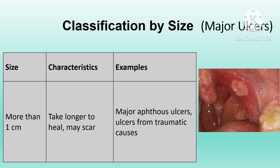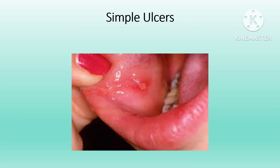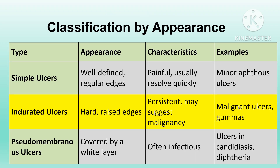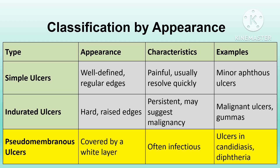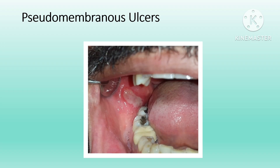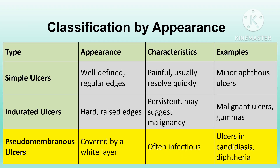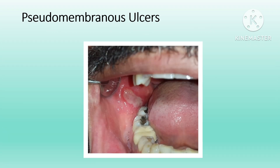Based on appearance, oral ulcers may be classified into simple ulcers, indurated ulcers, and pseudomembranous ulcers. Simple ulcers have well-defined regular edges, as seen in minor aphthous ulcers. Indurated ulcers have raised and hard edges, are persistent, and may suggest malignancy, as in gumma or malignant ulcers in squamous cell carcinoma. Pseudomembranous ulcers are covered by a white layer and are often infectious, as in candidiasis or diphtheria.